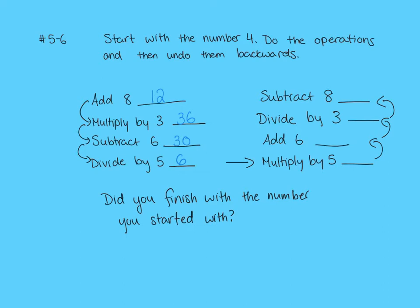Then we're following the arrow across to the right. We're going to multiply by 5. So 6 times 5 is 30. And then we add 6. 30 plus 6 is 36. Divide by 3. 36 divided by 3 is 12. And subtract 8. 12 minus 8 is 4. So did we finish with the number that we started with? Yes. We started with 4, and we ended with 4.